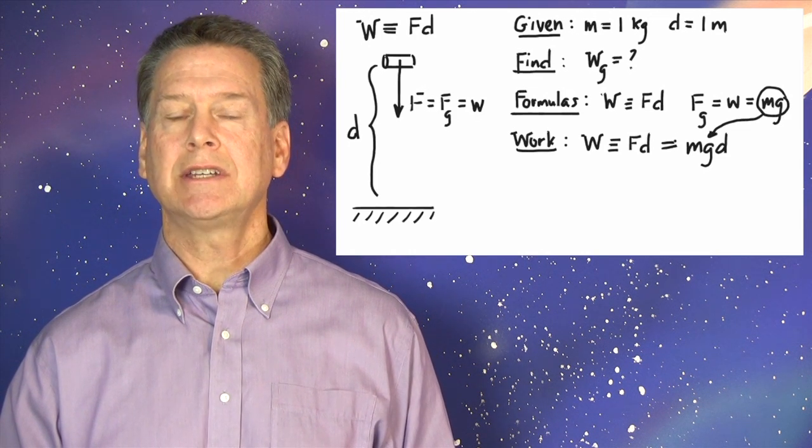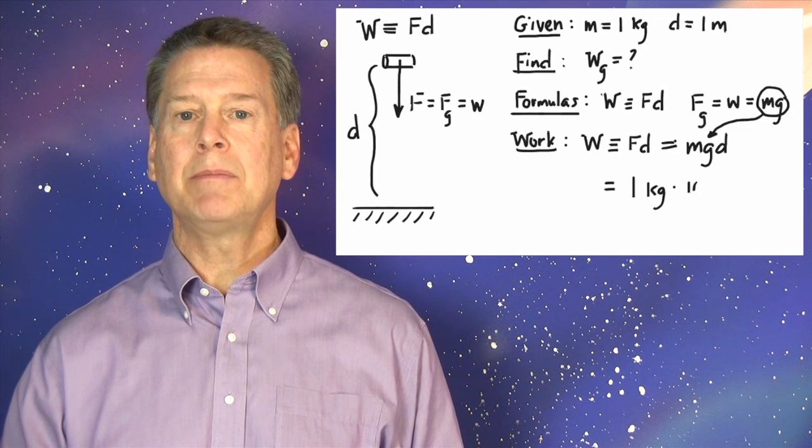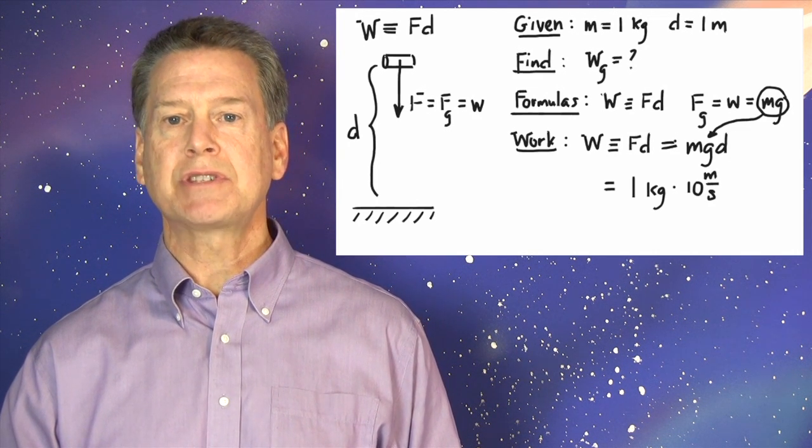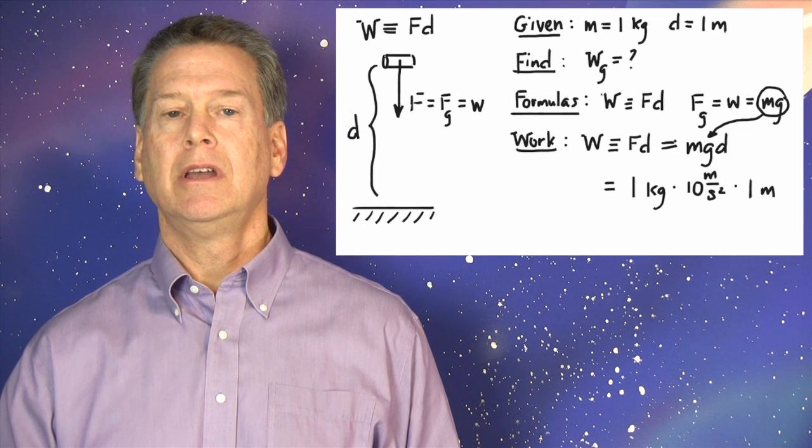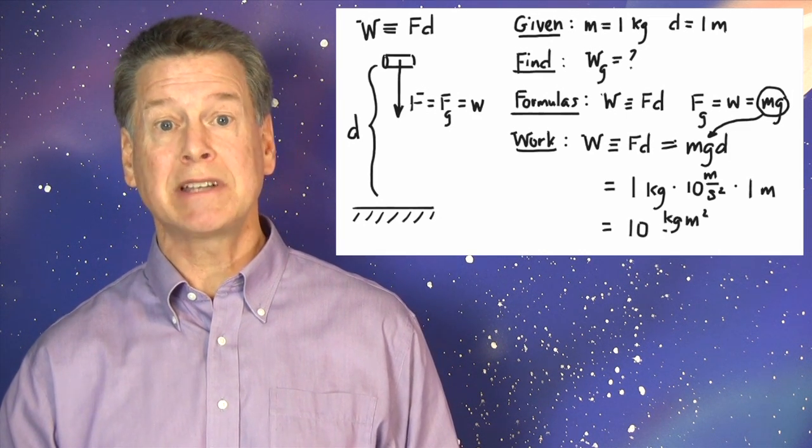Finally, plugging in numbers and units, we get capital W sub G equals 1 kilogram times 10 meters per second per second times 1 meter, which equals 10 kilograms times meters squared divided by seconds squared.